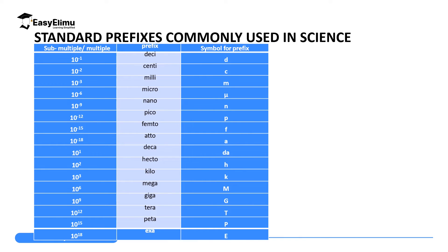Now we have the important standard prefixes used in science. Starting with negative powers: 10 to the power negative 1 is deci, symbol d. 10 to the negative 2 is centi, symbol c. 10 to the negative 3 is milli, symbol m. 10 to the negative 6 is micro, symbol μ. 10 to the negative 9 is nano, symbol n. 10 to the negative 12 is pico, symbol p. 10 to the negative 15 is femto, symbol f. 10 to the negative 18 is atto, symbol a.